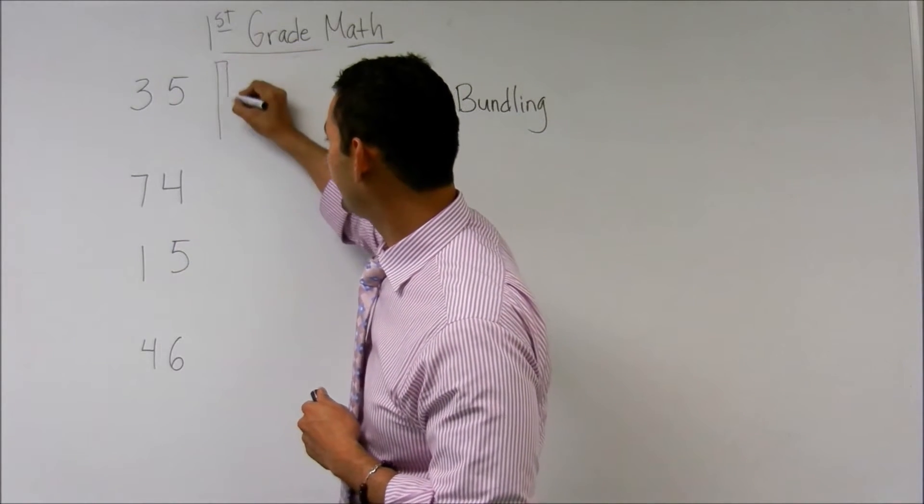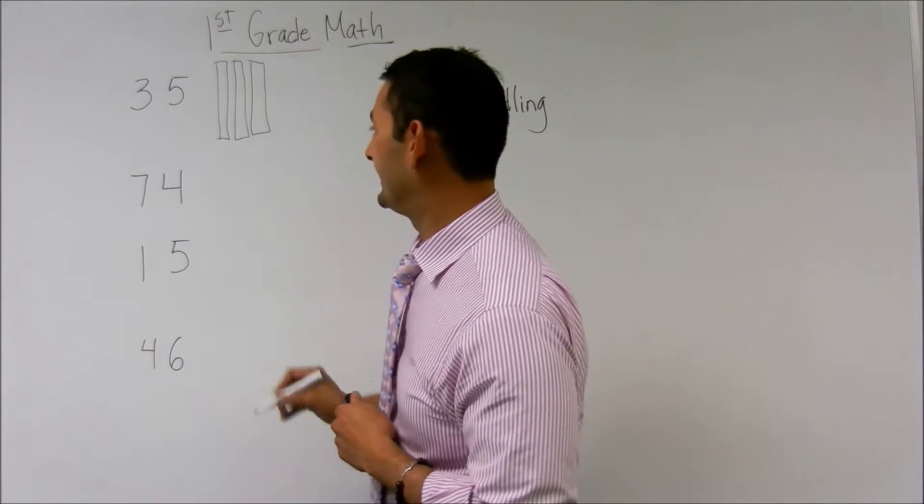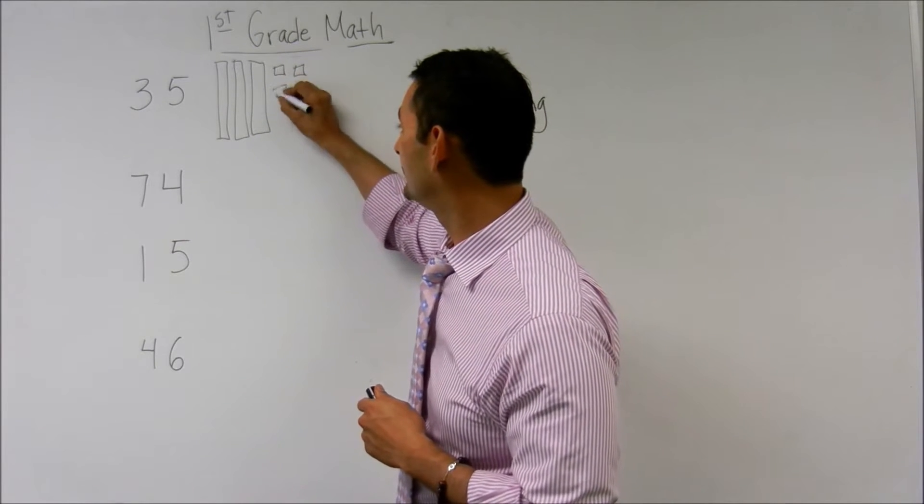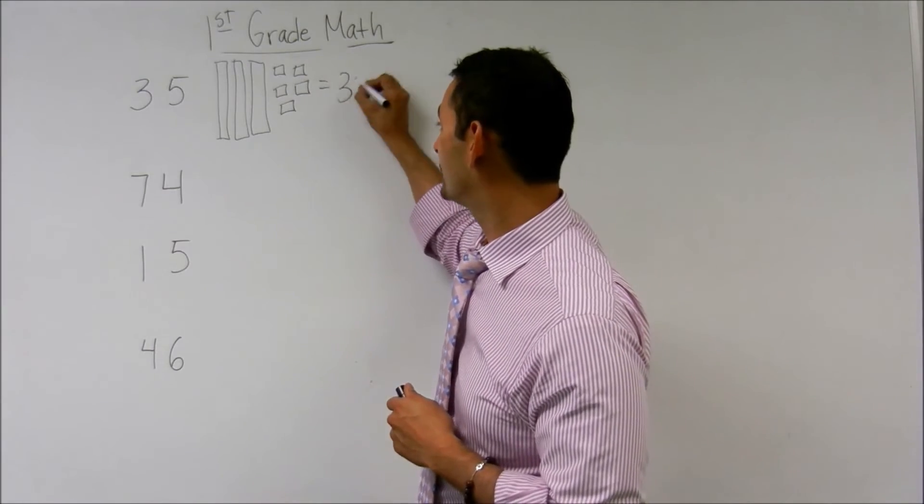We're going to make ten, twenty, thirty. And then we have five ones. One, two, three, four, and five. That equals thirty-five.